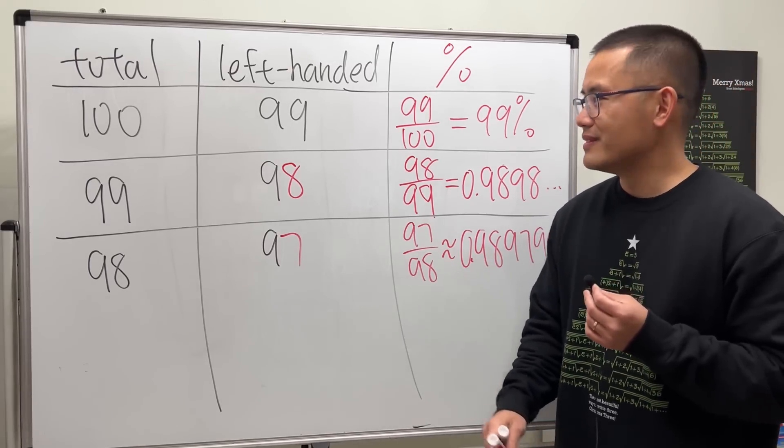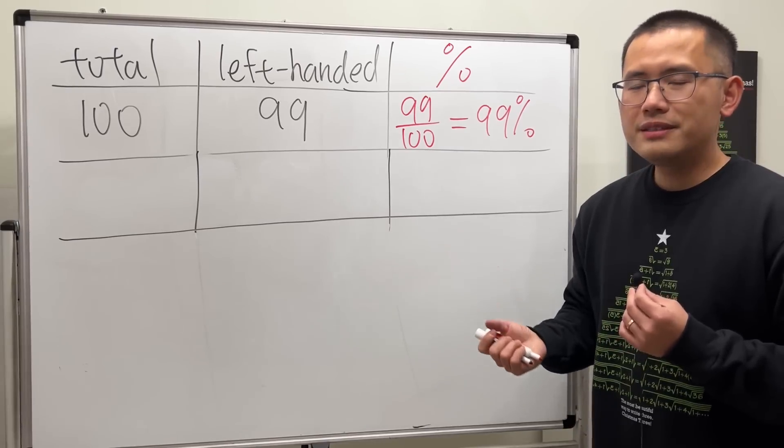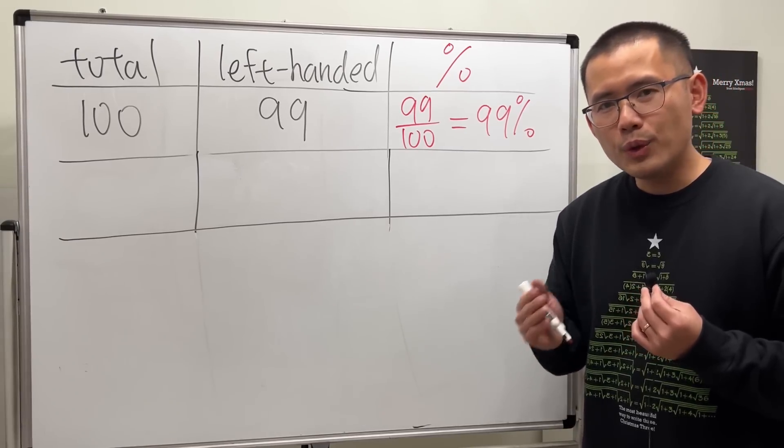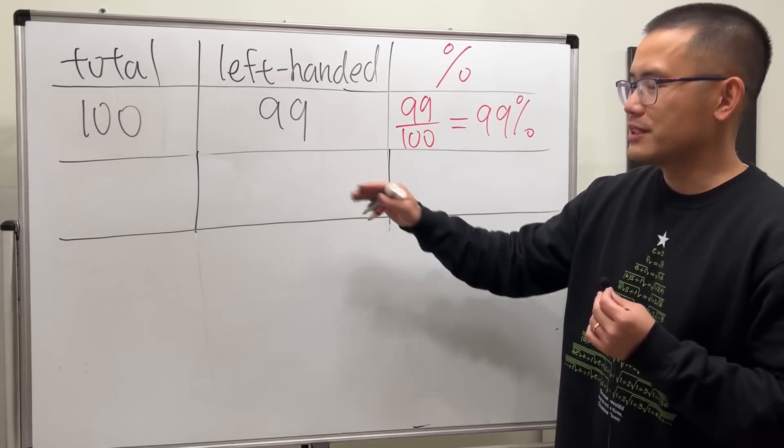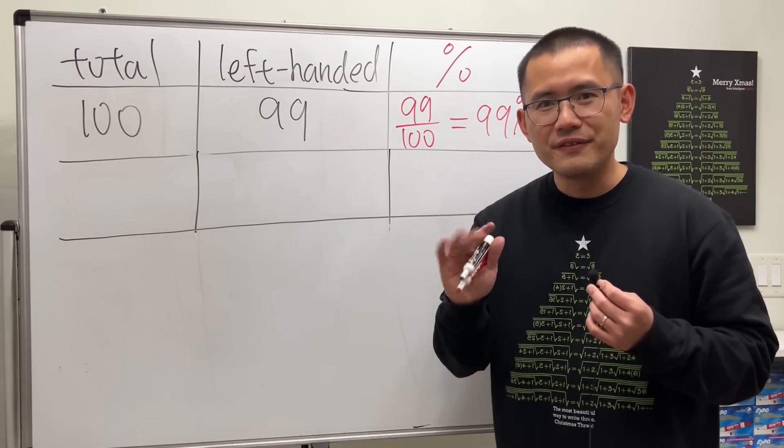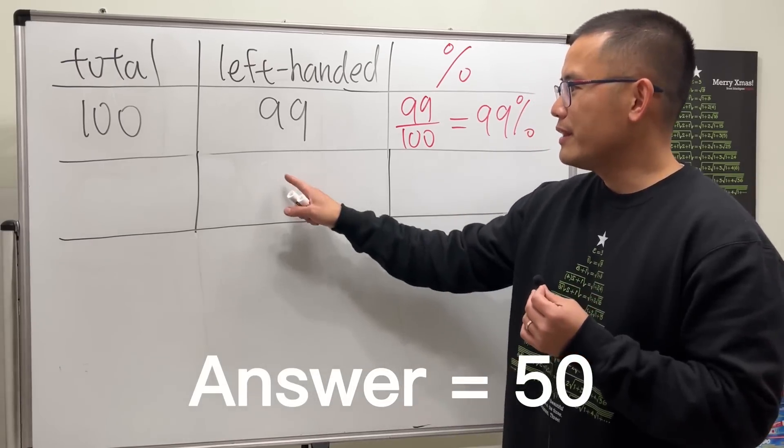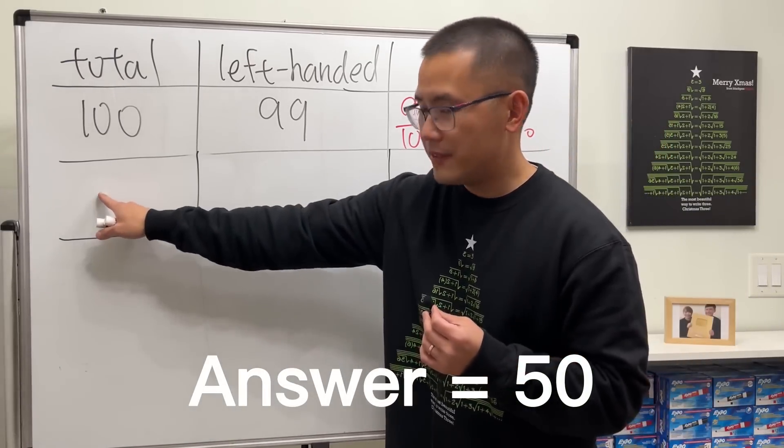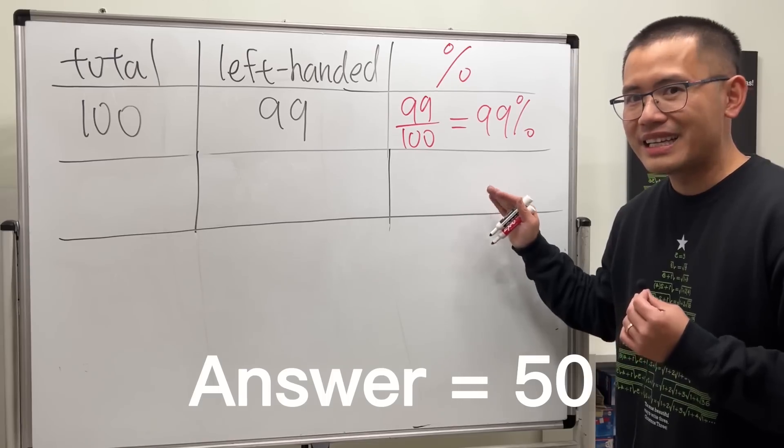So how many people do we actually have to remove? Here's the time that we can use algebra. But if you don't use algebra, of course you can just guess and check. I'll tell you the answer though: the answer is 50. 49 and 50 here, and that will give you exactly 98%.